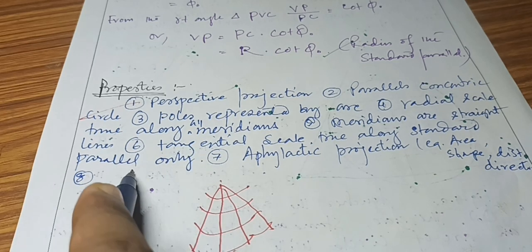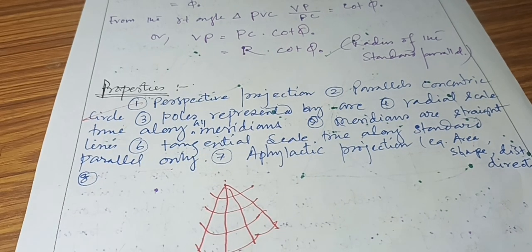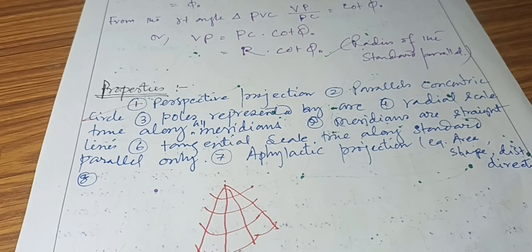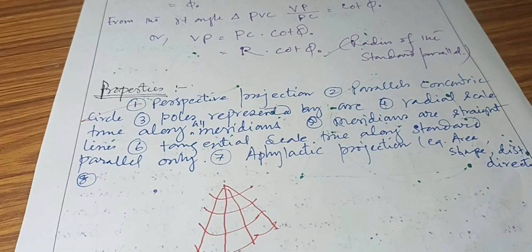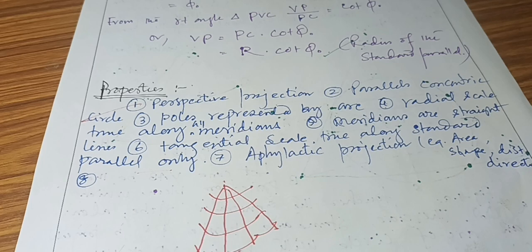The tangential scale is truly maintained only along the standard parallel. This is an aphylactic type of projection — a projection where none of the four properties of a map projection are maintained: equal area (homolographic), equal shape (orthomorphic), equidistance, and azimuthal direction. Because none of these are maintained, it is called an aphylactic map projection.